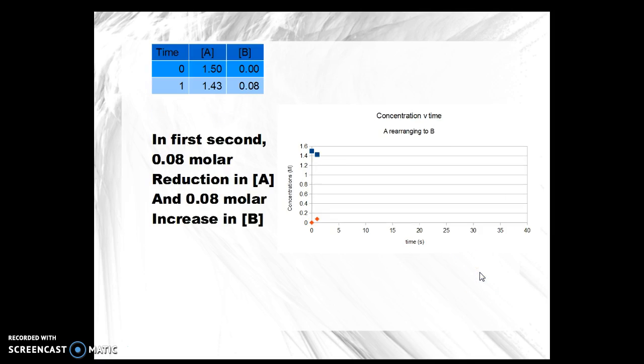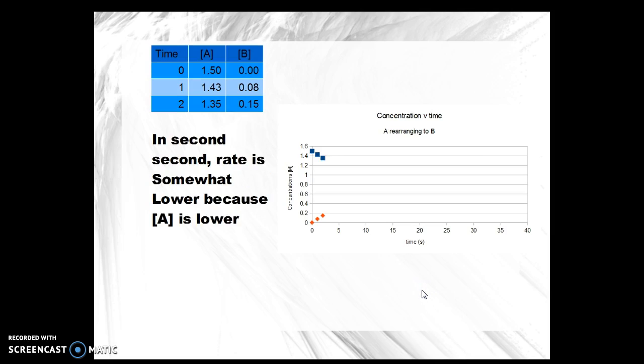In the first second, 0.08 molar reduction in A and a 0.08 molar increase in B because of the rate constant. Now, the rate constant is multiplied by the remaining concentration of A. And in the second second, the rate is somewhat lower because the concentration of A has gone down.